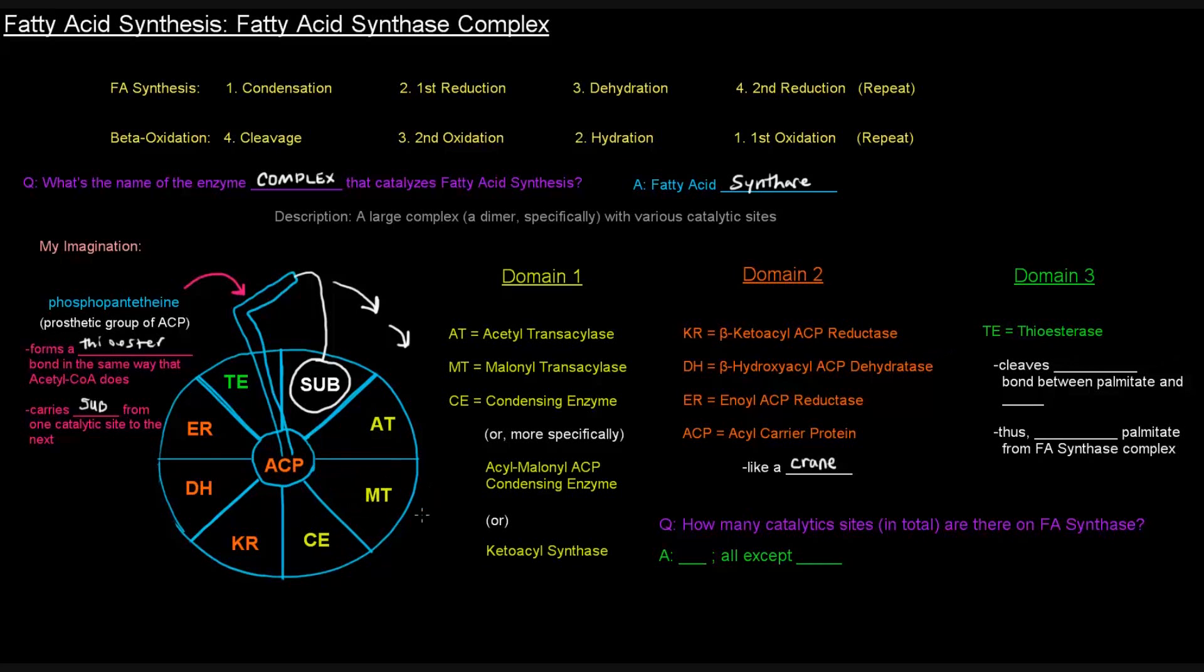The condensing enzyme is what actually links the acetyl group and the malonyl group. It's actually called acetyl-malonyl-ACP condensing enzyme, and it's called that because it connects the acetyl group to the malonyl group that's coming in to make a ketoacyl group, a ketoacyl structure, which is called ketoacyl-ACP. So the condensing enzyme is also called ketoacyl synthase for that reason.